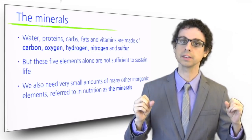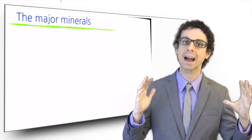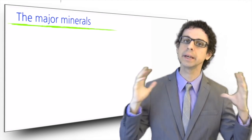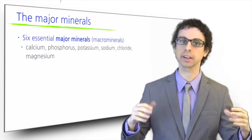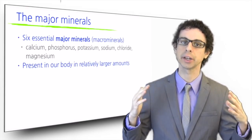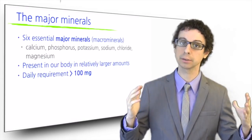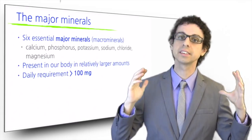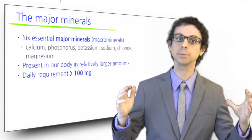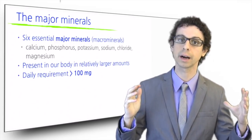Six of these minerals are called major minerals or macro minerals, not because they are bigger or more important, but because they are present in our body in relatively larger amounts, and therefore we need larger amounts of them from food. These six minerals are calcium, phosphorus, potassium, sodium, chloride, and magnesium.